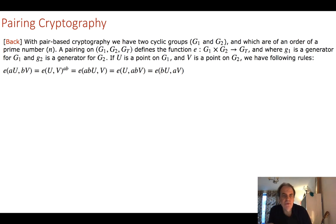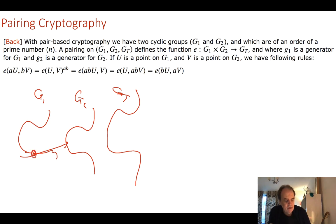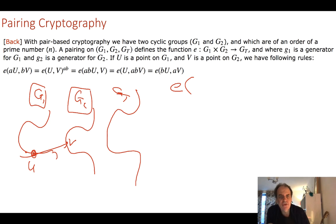The method we're going to use to implement this zero knowledge proof is called pairing cryptography. With pairing cryptography, if we use elliptic curves, we have two curves G1 and G2, and we create a pairing between these to create another curve GGT. It's this mapping that gives us special properties. We have a point u on one curve and a point v on the other, and the specialness of pairing cryptography is that we have a pairing function taking our points in G1 and G2 to give us special properties.